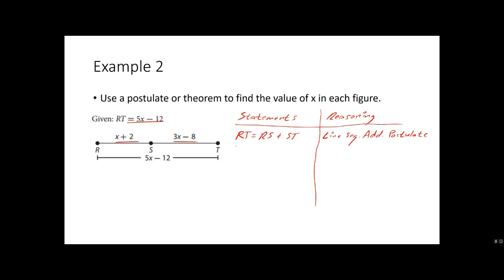Notice how I set up the idea, and I explained my reasoning, naming the postulate. No one will argue with me if I have that backed up. So rt, we give an algebraic expression. rs is an algebraic expression as x plus 2, and we also have st, so that is 3x minus 8. So this was substitution. Let's combine like terms.